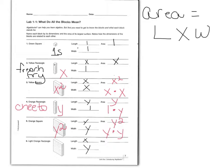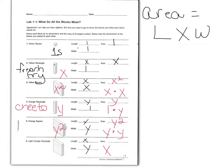The last piece we're going to look at is the light orange rectangle. If you compare it to our other pieces, its length exactly matches the french fry and its width exactly matches the cheeto. So we have x times y, which gives us xy. Our light orange rectangle will now be called xy.